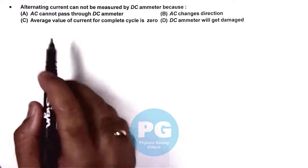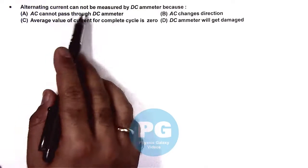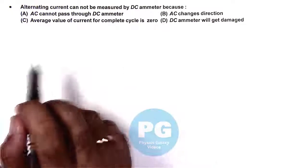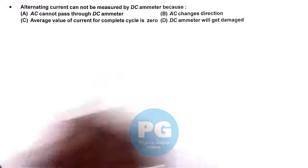In this question, it is asking alternating current cannot be measured by using DC ammeter because we need to mention the reason.